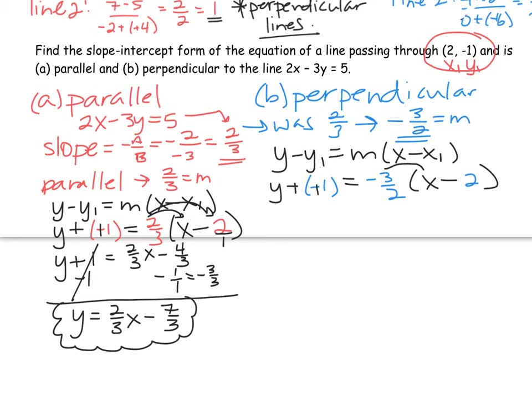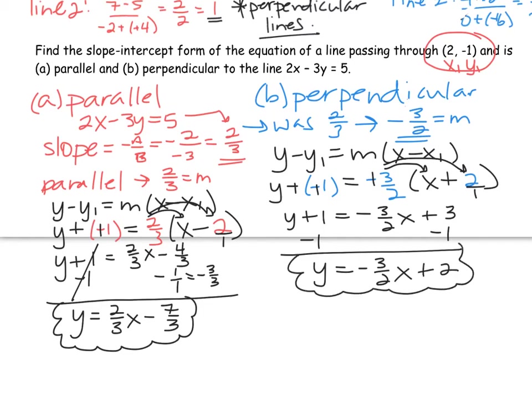Let's make our double negative positive. But now we'll distribute negative 3 halves in. This gives us y plus 1 on the left, negative 3 halves times x. Now watch what happens when we take negative 3 halves times negative 2. If I put negative 2 over 1, the two negatives will cancel out when you distribute and give us plus 3 times 2 is 6 over 2 times 1, which would be 3. If we subtract 1 to get y by itself, we get y equals negative 3 halves x plus 2. This equation is now perpendicular to the original, but going through the same point.